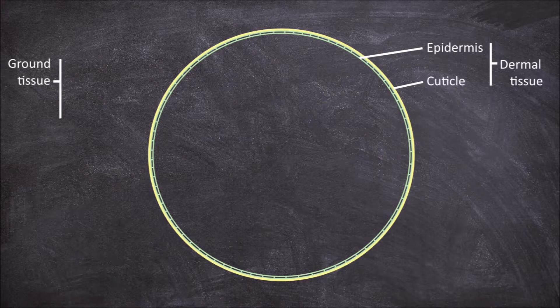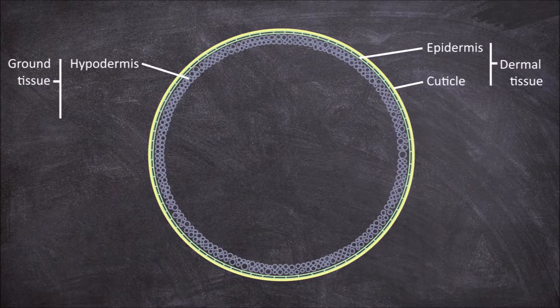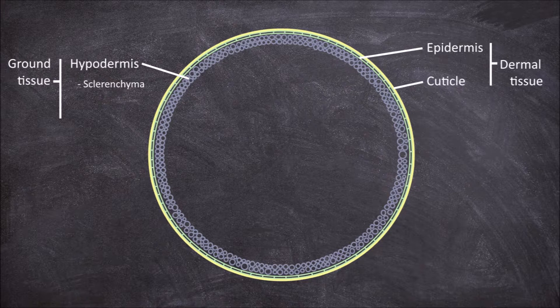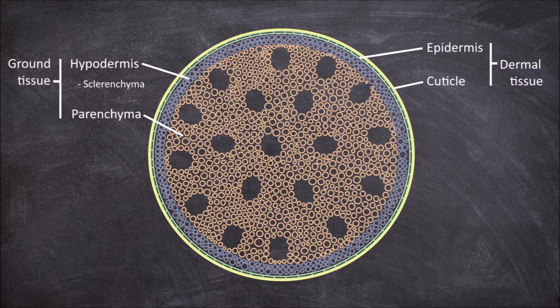The ground tissue within the stem is not organized into a cortex and pith like in the dicot stem. Instead the ground tissue consists of a hypodermis which is made up of several layers of sclerenchyma cells which are strong thick cells that provide structural support to the stem. The ground tissue also consists of a continuous mass of parenchyma cells.